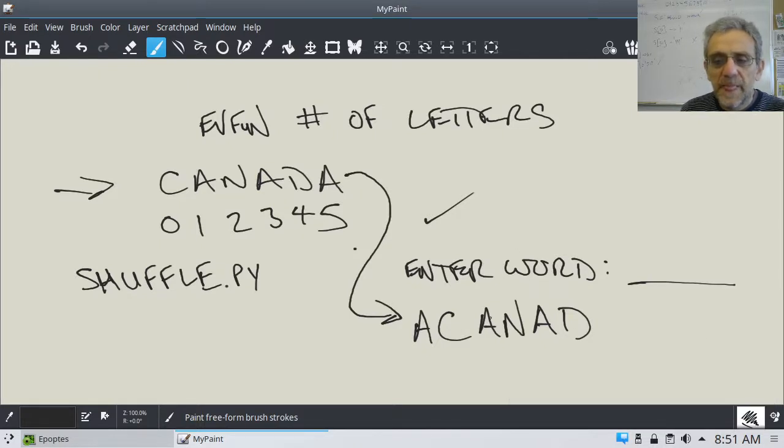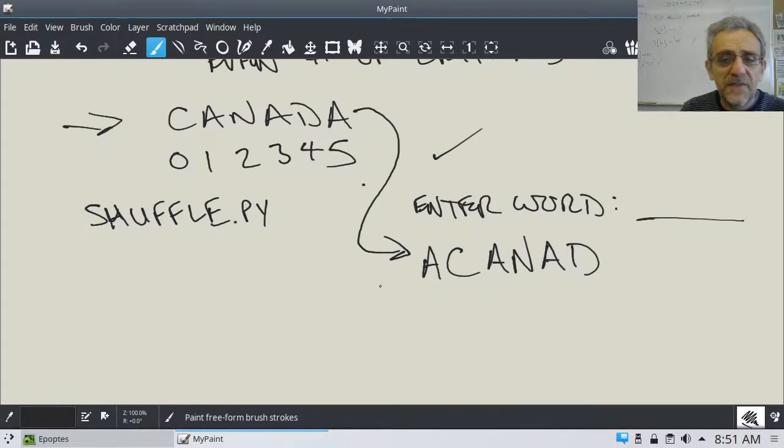So essentially, here's another example, see if you can figure it out if I do another one. If the word was love, then the program should return this string. O, L, E, V.